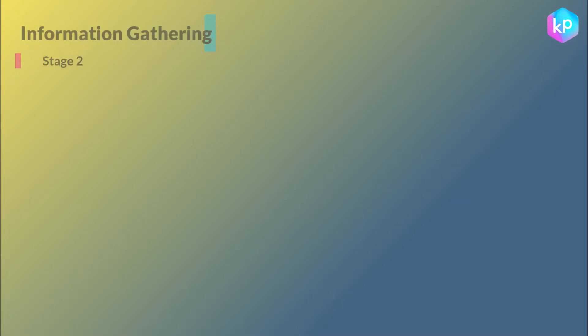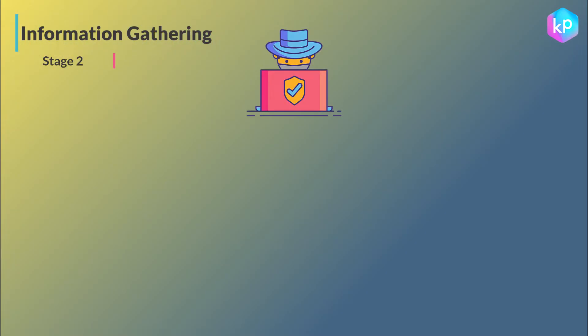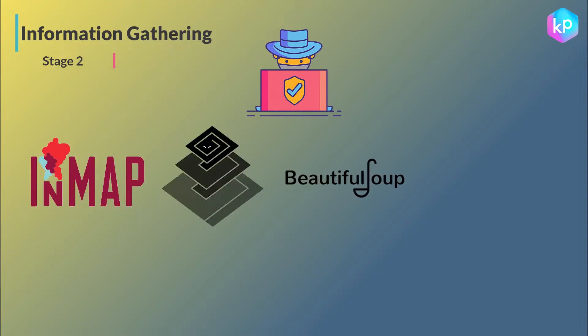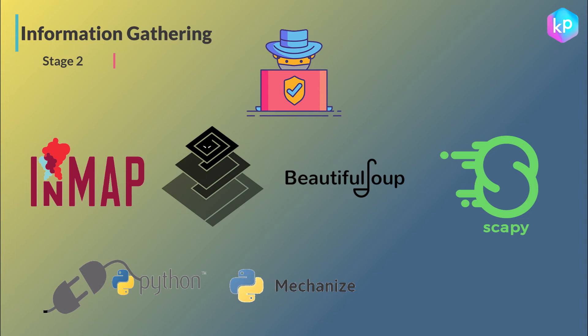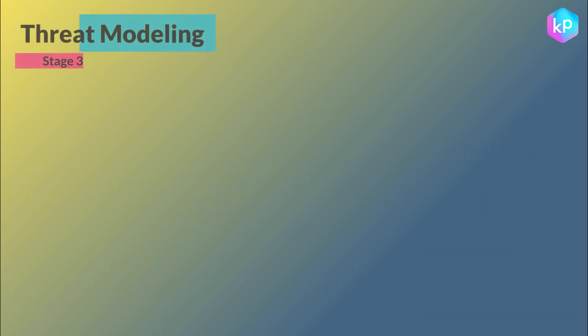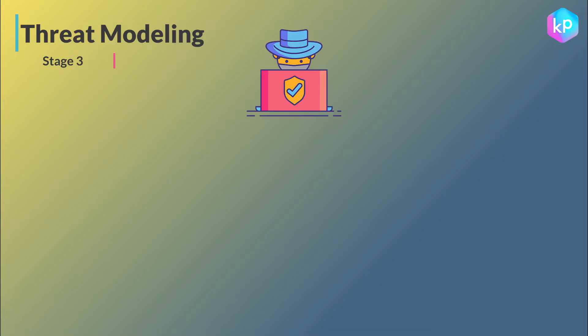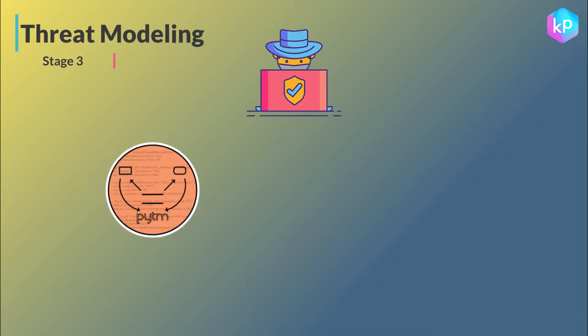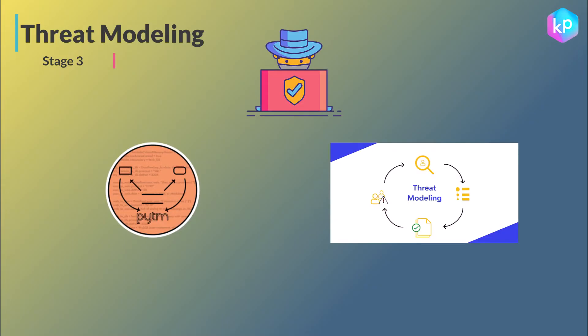Stage 2 — Information Gathering: pen testers rely on the Python libraries Nmap, Twisted, Beautiful Soup, Scapy, Socket, Mechanize, and deployed script. Stage 3 — Threat Modeling: pen testers rely on the Python libraries PYTM framework and threat modeling.